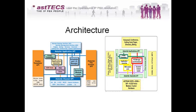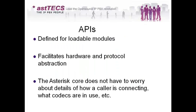APIs are defined for loadable modules — this facilitates hardware and protocol abstraction. The Asterisk core does not have to worry about the details of how a caller is connecting or what codecs are in use, because Asterisk works on its own indigenous protocols. The core does not need to worry about whether the call is coming from SIP, GSM, PRI, or which trunk is being used, and we can use a different codec at the trunk level versus the Asterisk extension level.